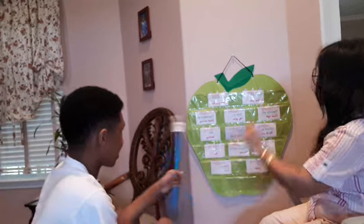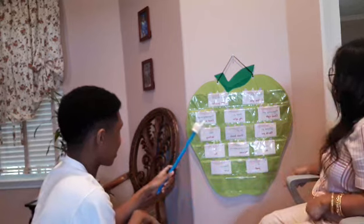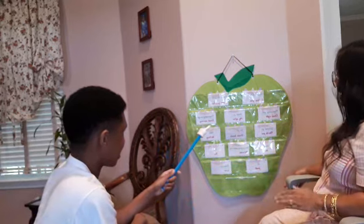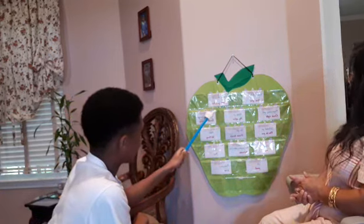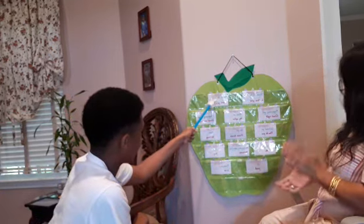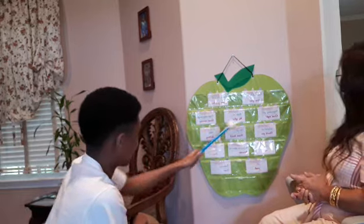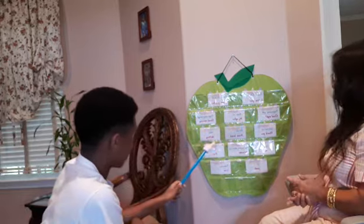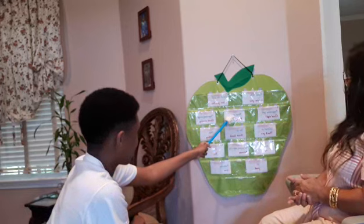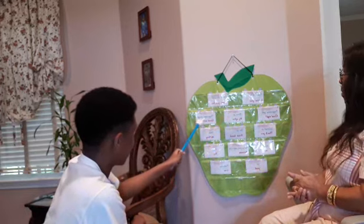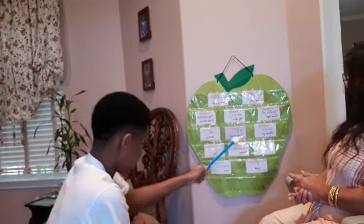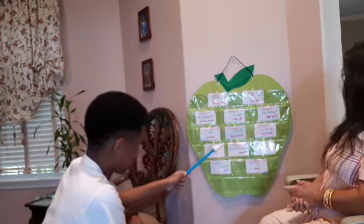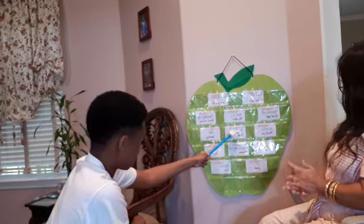Okay, one more. Where is the word? You point to the word or the sentence. Mahal kita — all right, good job! Mahal kita. All right. Magandang gabi — good. Mano po — all right. Magandang umaga — all right. Salamat po — good. Tao po — good job.